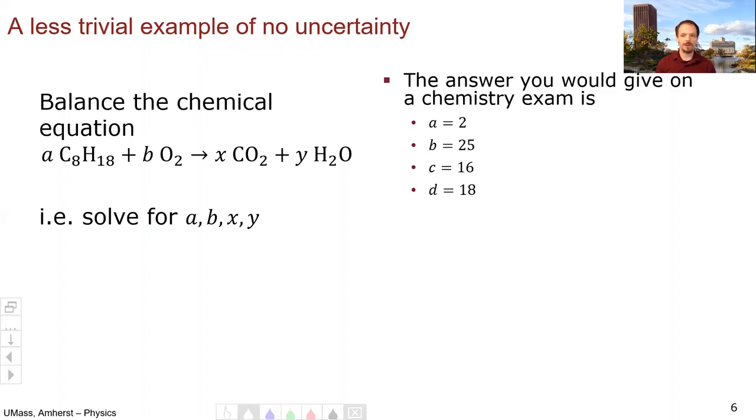So what would you give on a chemistry exam? You'd give A is 2, B is 25, C is 16, and D is 18.